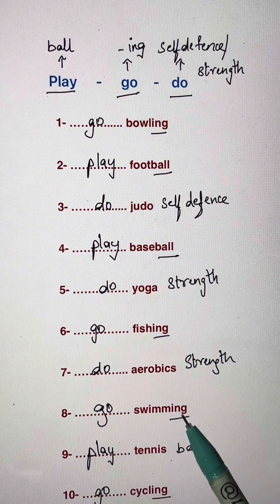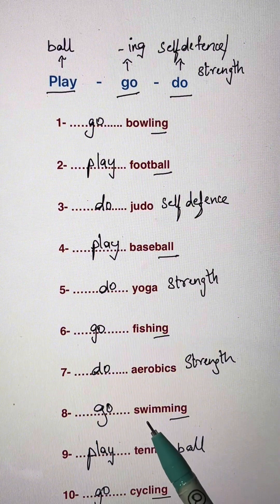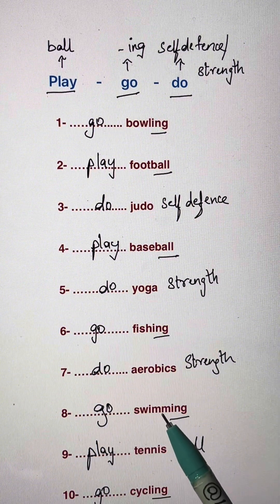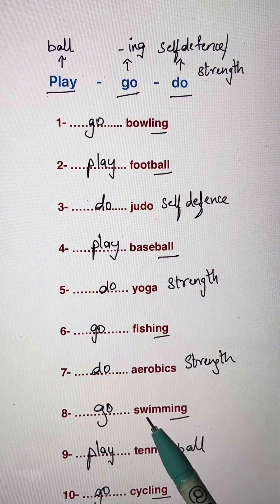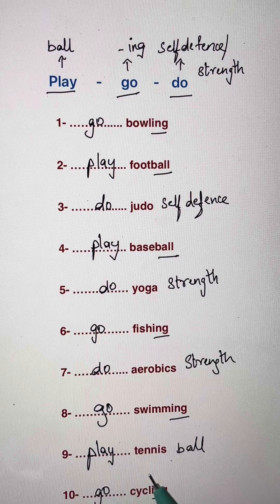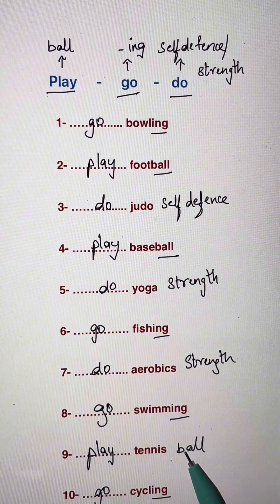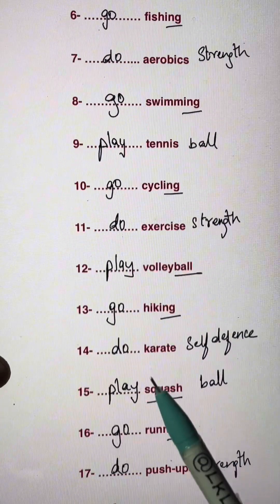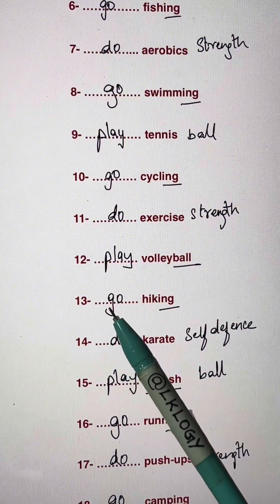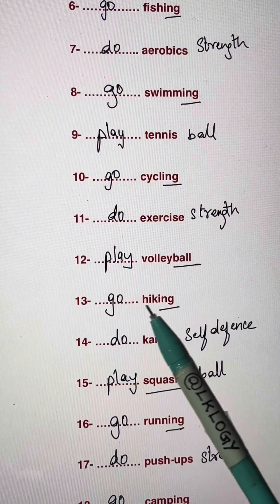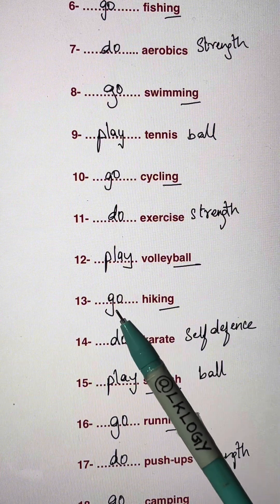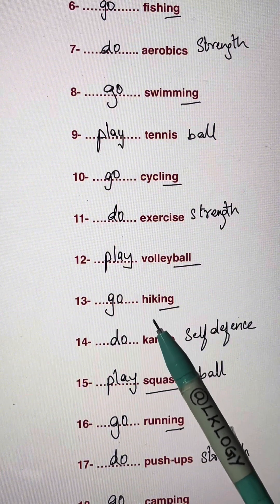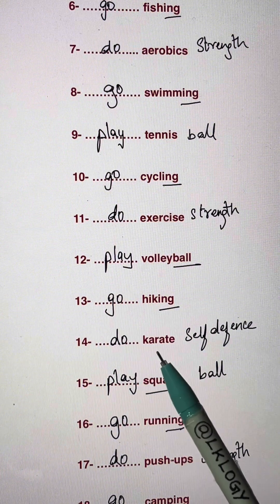Blank swimming — it has -ing so go swimming; you can go alone or with a partner. Blank tennis — tennis is a ball sport and a team sport: play tennis.